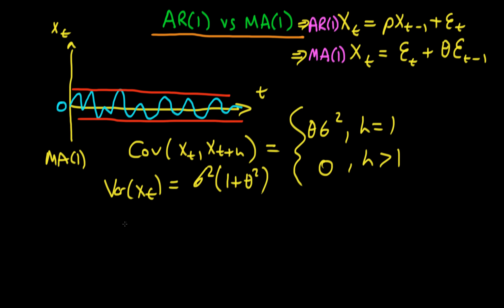Combining these two things allows us to come up with the correlation of X_t with X_{t+h}. For the example of an MA(1) process, this would just be equal to θσ² divided by σ²(1 + θ²). That's for the circumstance where h equals 1, and it's equal to 0 for h greater than 1.